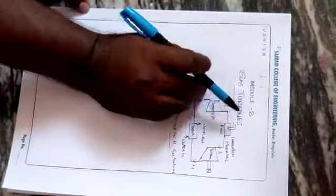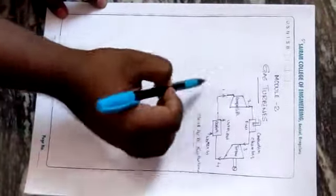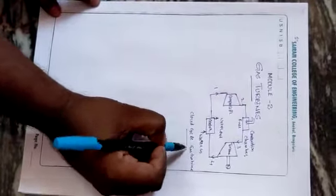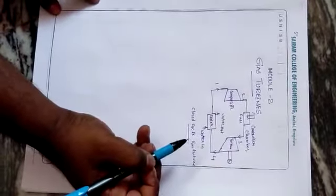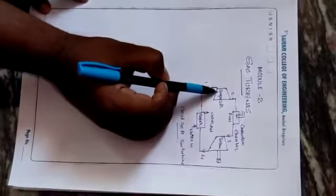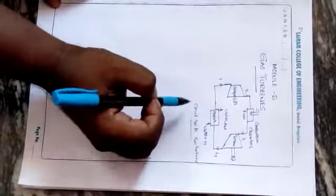Dear students, today we are going to study gas turbines, which comes under module 2. In the previous classes we have seen the working principle of closed cycle gas turbine as well as open cycle gas turbine. Today I have taken the closed cycle gas turbine for a recap. There are different components: compressor, combustion chamber, turbine, and cooler — four components through which air is circulated throughout the cycle.